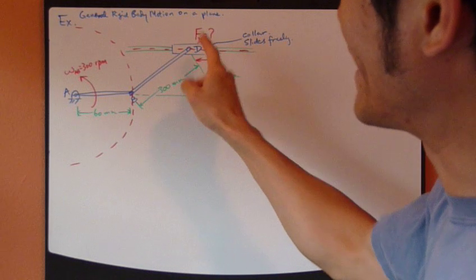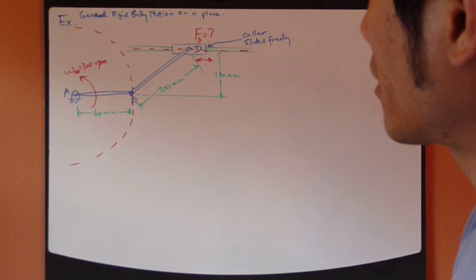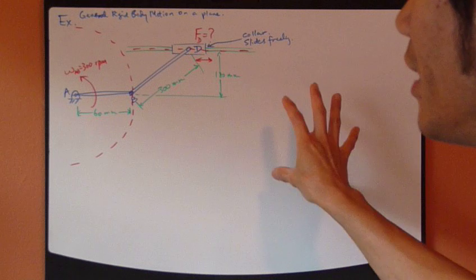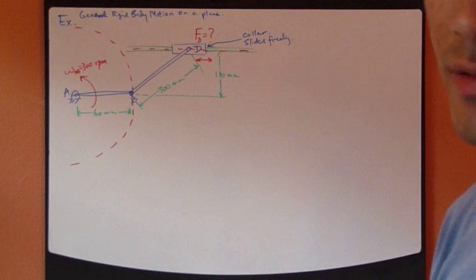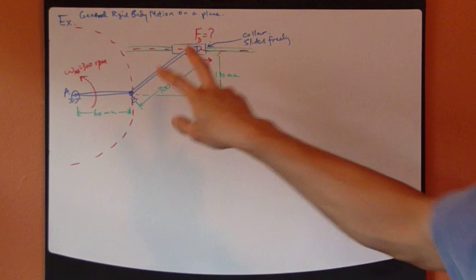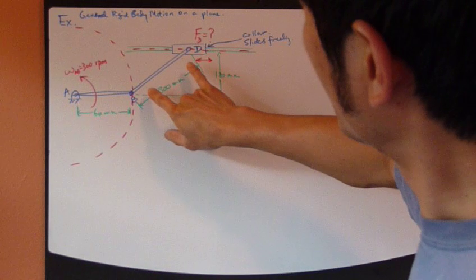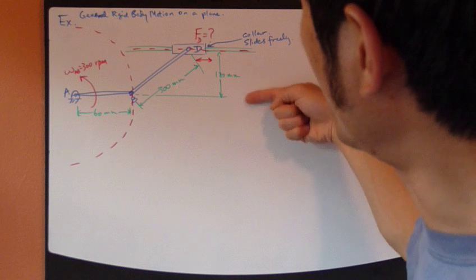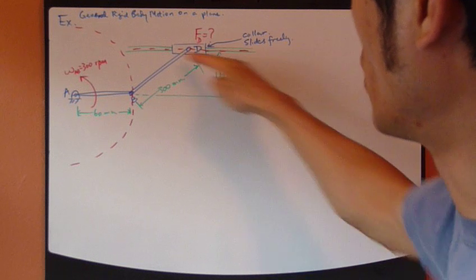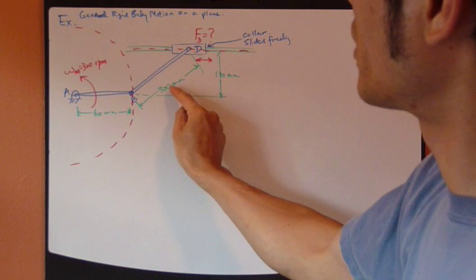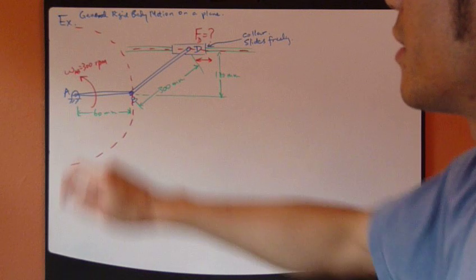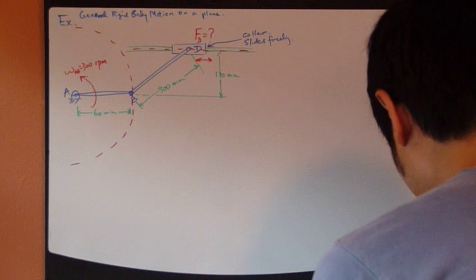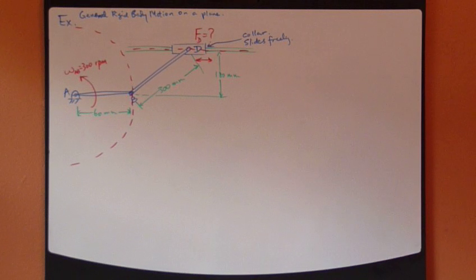We want to find what's going on at D. So let's draw the free body diagram and write down this Newton's second law equation to see what's needed. Now at this instance, this link BD is angled such a way that it is 180 degrees below this rod. The length of BD is 300 and then AB is given at 60 millimeters.